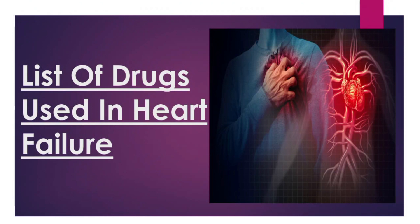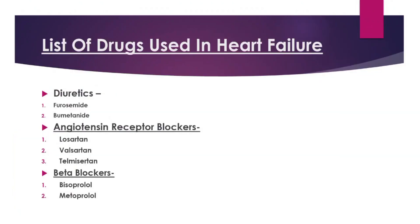Heart failure patient management is mainly used in hospital. The first drug class is diuretics. Examples of drugs are furosemide and bumetanide. These drugs mainly help to inhibit reabsorption of sodium and chloride ions at the proximal and distal tubule and loop of Henle.